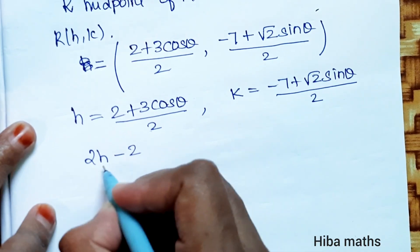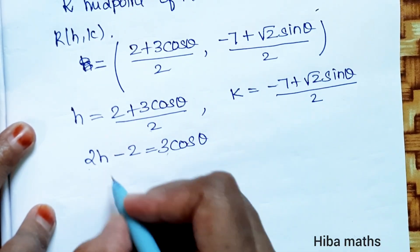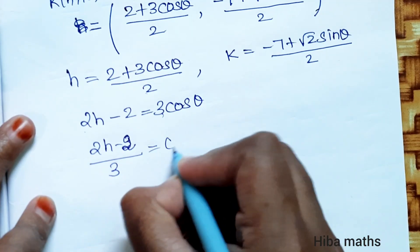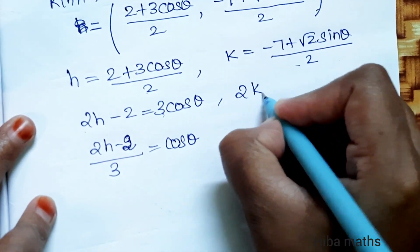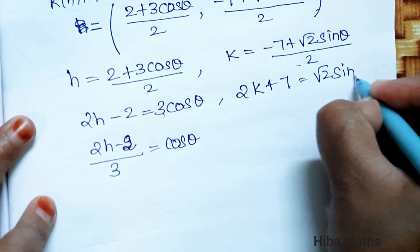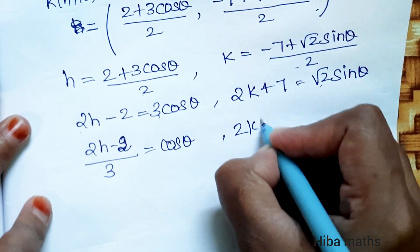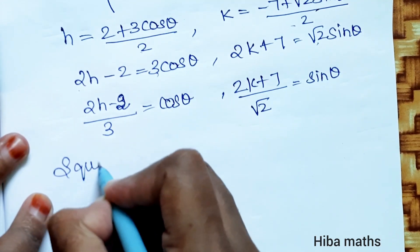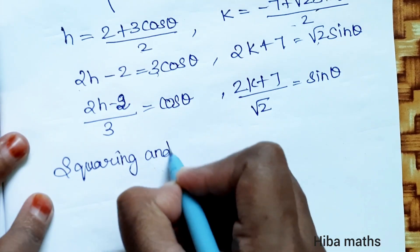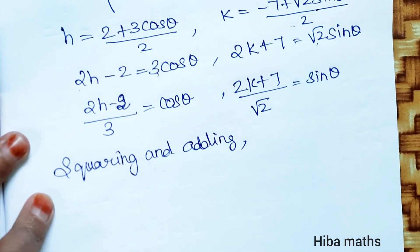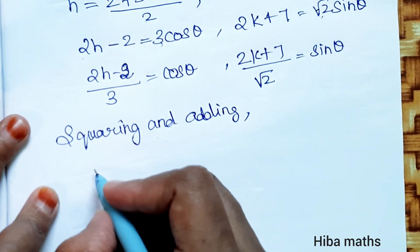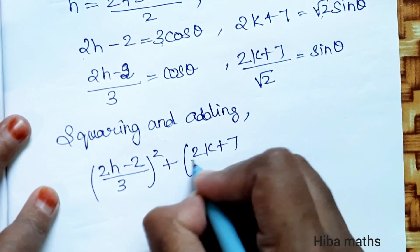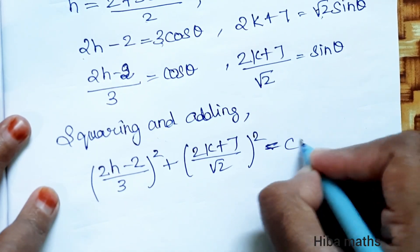Rearranging: 2h - 2 = 3 cos θ, so cos θ = (2h - 2)/3. And 2k + 7 = √2 sin θ, so sin θ = (2k + 7)/√2. Now squaring and adding using cos²θ + sin²θ = 1: [(2h - 2)/3]² + [(2k + 7)/√2]² = 1.